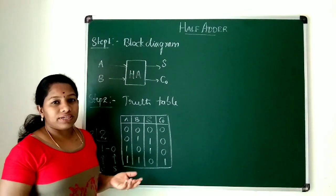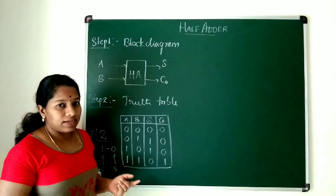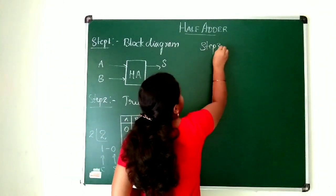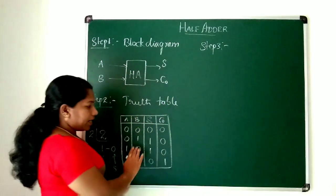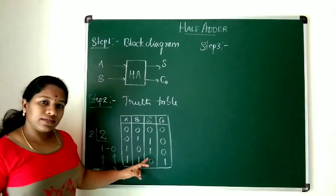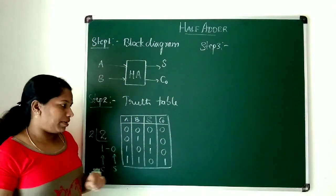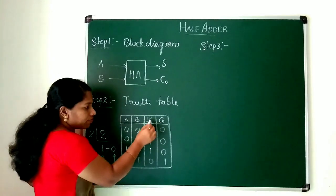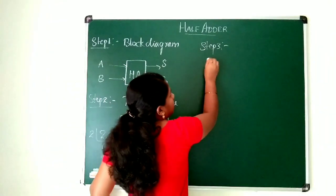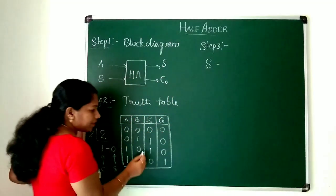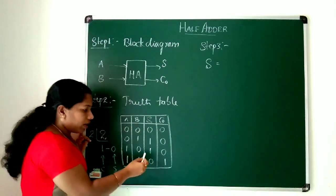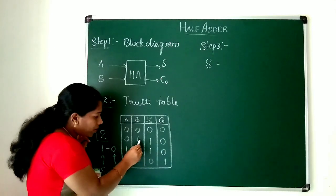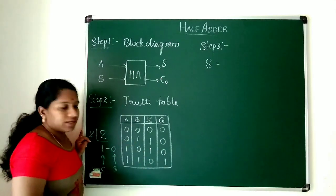Now we proceed to step 3, which says you need to get the expression from the truth table. I need to extract the expression for sum. In the sum column, wherever you have a 1, you take the corresponding A and B values.